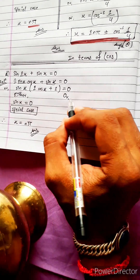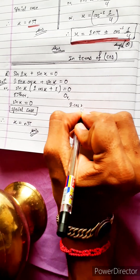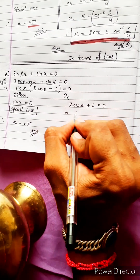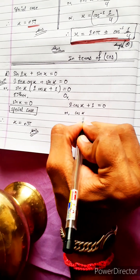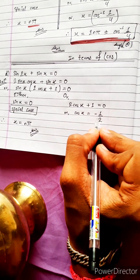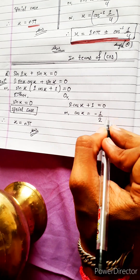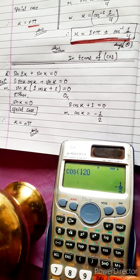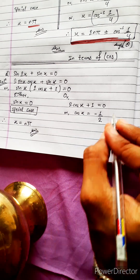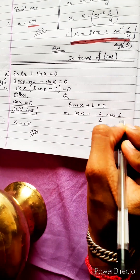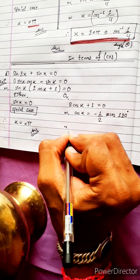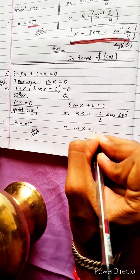Now, 2cosx plus 1 is equal to 0. This gives cosx equal to minus 1 by 2. How is 1 by 2 equal? Cos x is equal to minus 1 by 2.